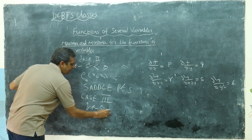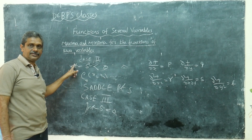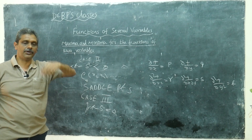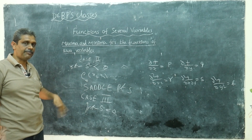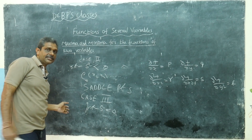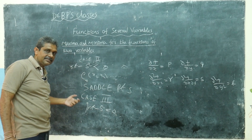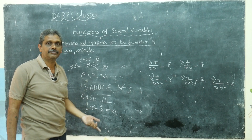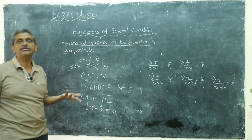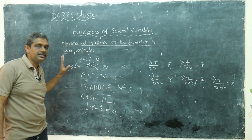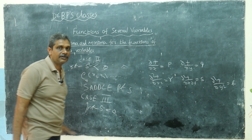If rt − s² = 0, further investigation is needed, which we do not discuss here. In summary: find ∂f/∂x = 0 and ∂f/∂y = 0 to get the bunch of points. Compute rt − s²: if it is greater than zero, check r — if r > 0 it is a minimum, if r < 0 it is a maximum. If rt − s² < 0, those are saddle points, neither maximum nor minimum.